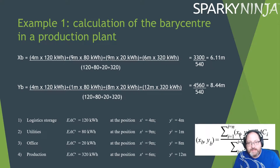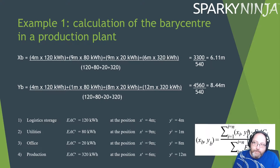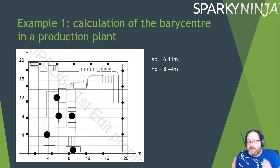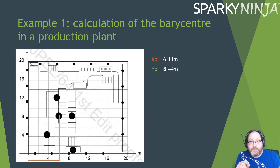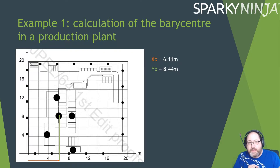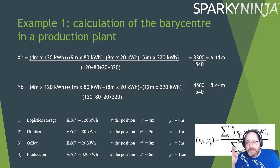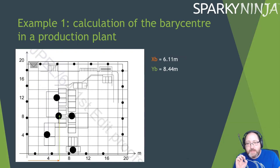You do the same calculation for the Y-axis and you end up with an X length and a Y length, which you then plot. The calculation comes out to an X-axis of 6.11 meters and a Y-axis of 8.44 meters. Going along the bottom X-axis 6.11 meters and up Y 8.44 meters — that black circle indicated by the green arrow is our optimal position. Those other four points are logistics storage, utilities, office and production, and we've calculated the best position considering both distance and power.